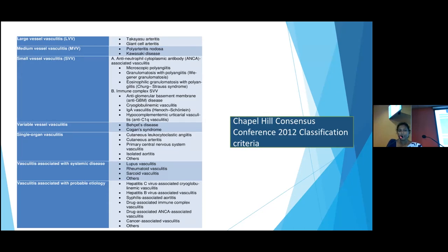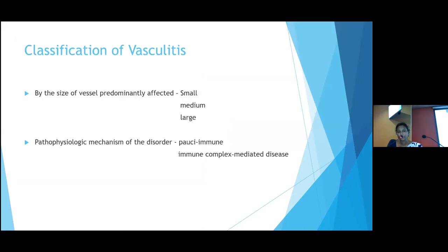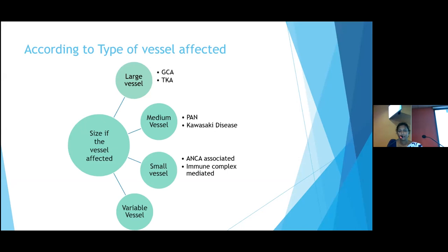The Chapel Hill Consensus Conference classification categorizes systemic vasculitis by vessel size. Large vessel vasculitis includes Takayasu's arteritis and giant cell arteritis. Medium vessel vasculitis includes polyarteritis nodosa and Kawasaki disease. When it comes to the lungs, the most important category is small vessel vasculitis, which is classified into ANCA-associated and immune complex-associated small vessel vasculitis. I would like to briefly summarize the large and medium vessel vasculitis before focusing on small vessel vasculitis and the lung.